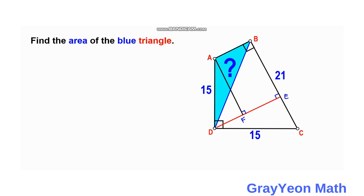Since point F is perpendicular, this angle is also 90 degrees. And the angle at D is also 90 degrees, because the other is 90. So this should be complementary — we can label this complement angle as Y. And since this is Y, if we look at triangle AFD, this angle here should be X, to complete the complement for Y.